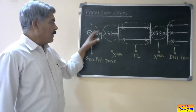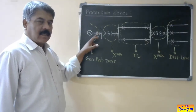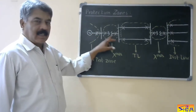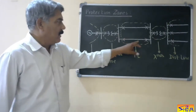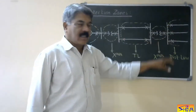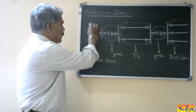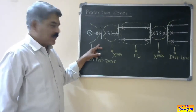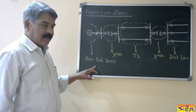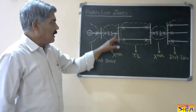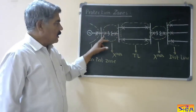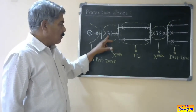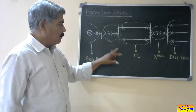Now for the generator, we are using this circuit breaker and relay. For the transformer, these are the circuit breakers and relays. This particular area is called as the generator protection zone. This part of the power system covering the step-up transformer is called as the transformer protection zone.